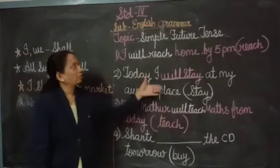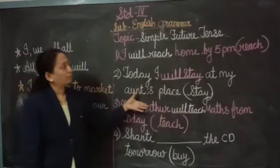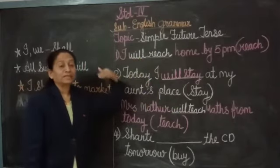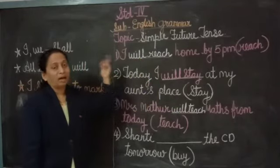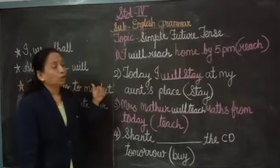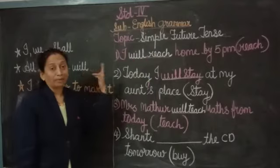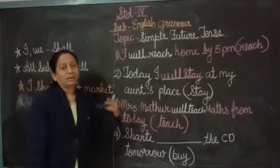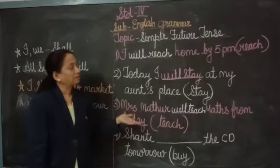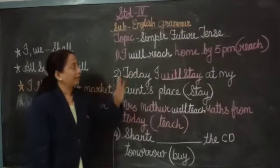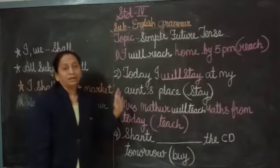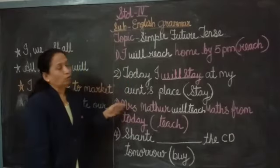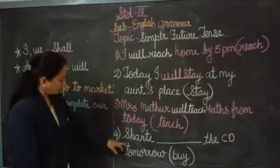So whenever you are talking about Simple Future Tense, we have to use the word 'will' — for incidents that are going to happen after some hours or days, but are not happening right now.